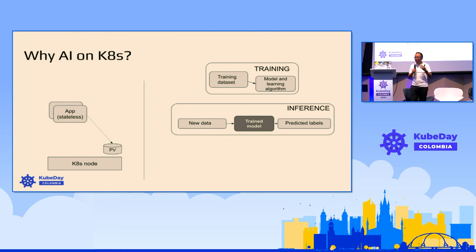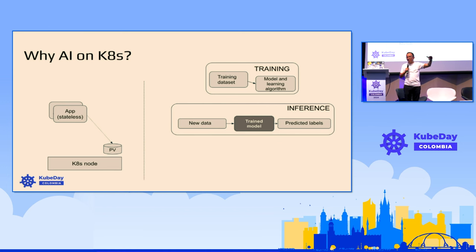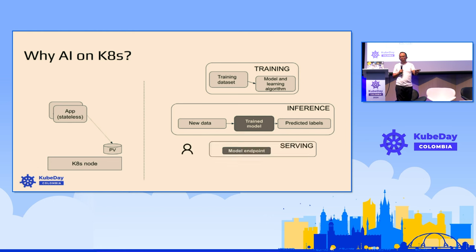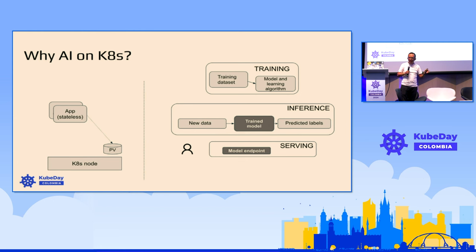Models will never return a 404 error. Errors are very different here than in regular microservices. In microservices, if the service is down you'll get a 503 or 404. But here the model could be completely hallucinating and it won't return an error — so observability is very different. That's called inference: where you have your trained model receiving new data and trying to make predictions. Then you need to make this model available to the outside world — your users or another application. That's what we call model serving — an endpoint that your users or another application queries.